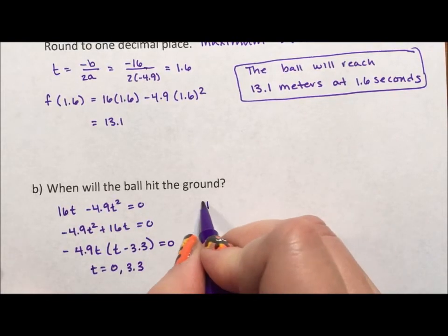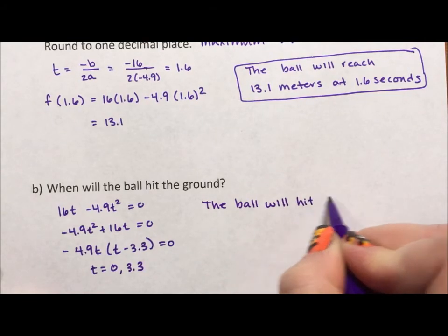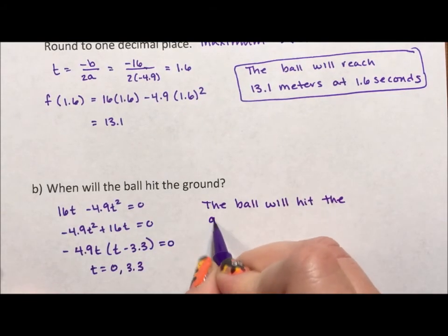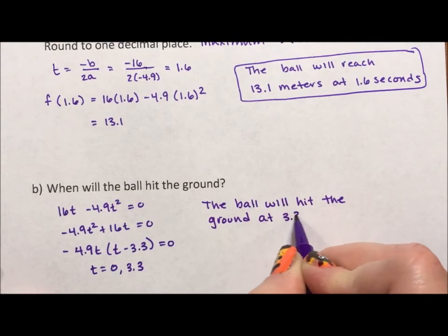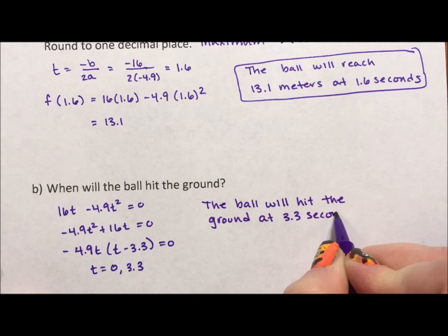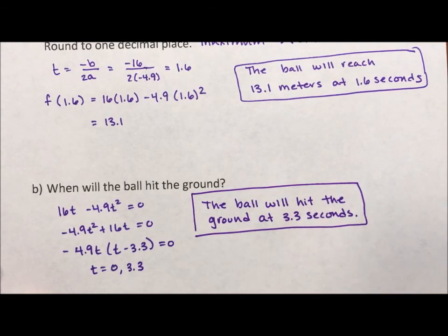So the ball will hit the ground at 3.3 seconds. Now I'm not putting the zero in because that's when it starts. That's not when the ball is hitting. That's the beginning of the path.